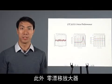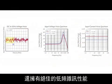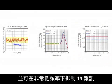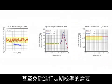In addition, zero-drift amplifiers have great low-frequency noise performance and suppressed 1/f noise down to very low frequencies. This complete set of characteristics will allow you to reduce or eliminate the need for periodic calibration.